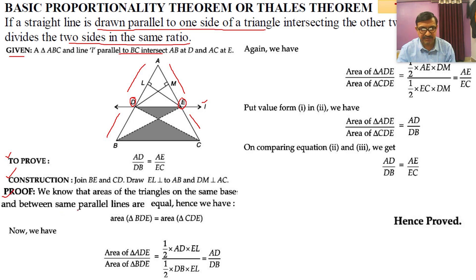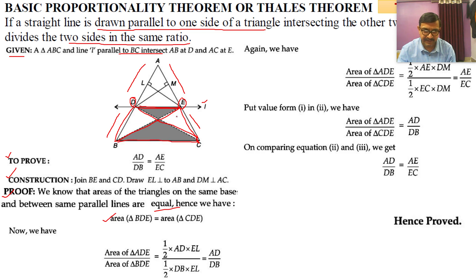Proof starts now. We know that areas of triangles on the same base between the same parallel lines are equal. Hence, area of triangle BDE equals area of triangle CDE — these two triangles are on the same base. First, we find the ratio of area of triangle ADE to area of triangle BDE. This perpendicular is very important.